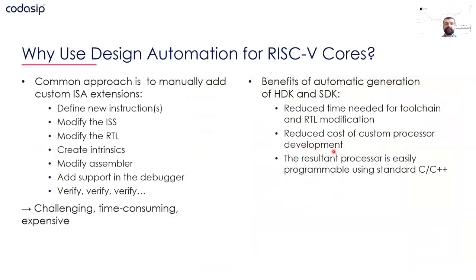Once you identify instructions, you need to implement them. There are two basic approaches. The manual approach means changing the compiler, simulator, intrinsics, programming tools, debuggers, and verifying many things. That's a valid approach, but it's challenging — you need larger or more experienced teams, and it can be time-consuming and expensive. What if you could automate one, two, or even all of those steps? That's the direction we've chosen at Codasip: to automate as much as possible.